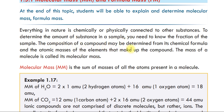The composition of a compound may be determined from its chemical formula and the atomic mass of the elements that make up the compound. The fraction of the sample can be found in the compound.